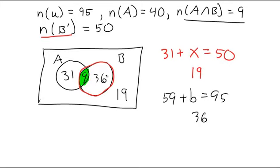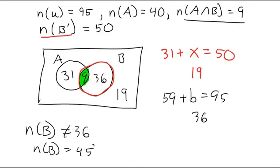So now whatever question they ask we can answer. If they ask us for the number of things in B, that is not 36. The number of things in B is everything in B and the entire circle of B has this 36 plus that 9 which is 45.